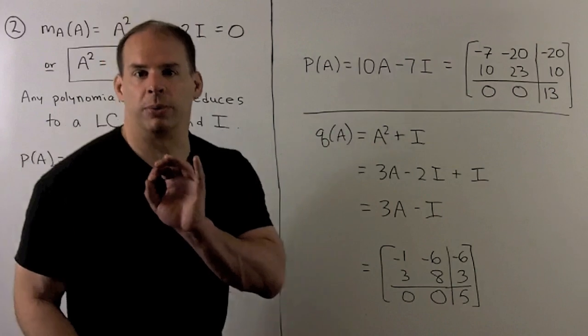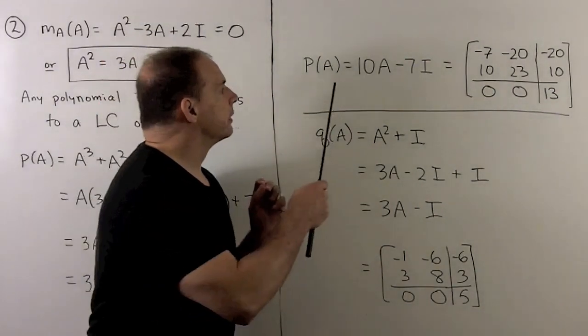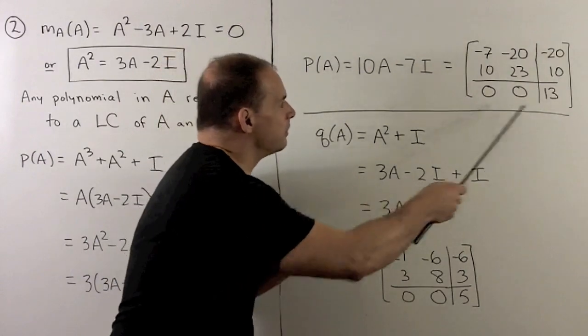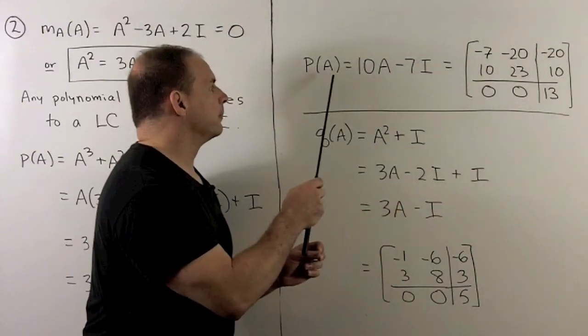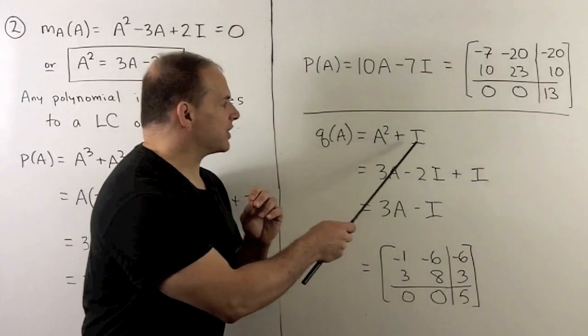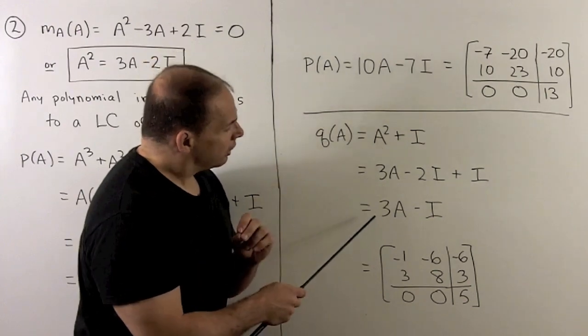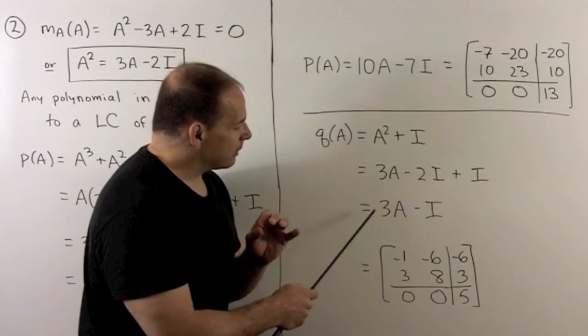Rather than doing all these matrix multiplications, I'm just going to evaluate a linear combination. Here we're going to get this matrix for P of A. For Q of A, that's going to give us A squared plus I. We could substitute out the A squared, giving us 3A minus I, and we get the matrix here.